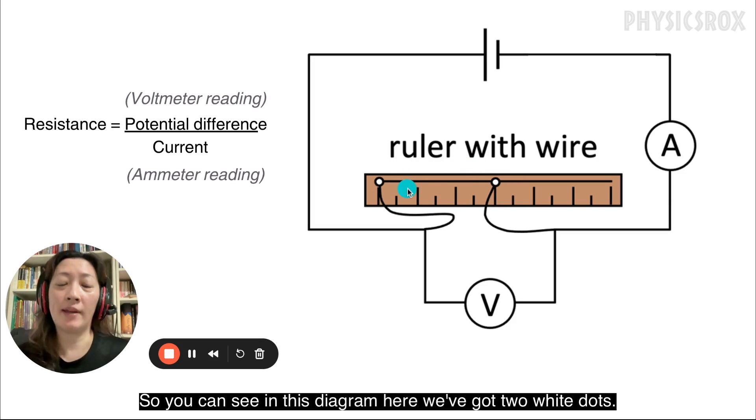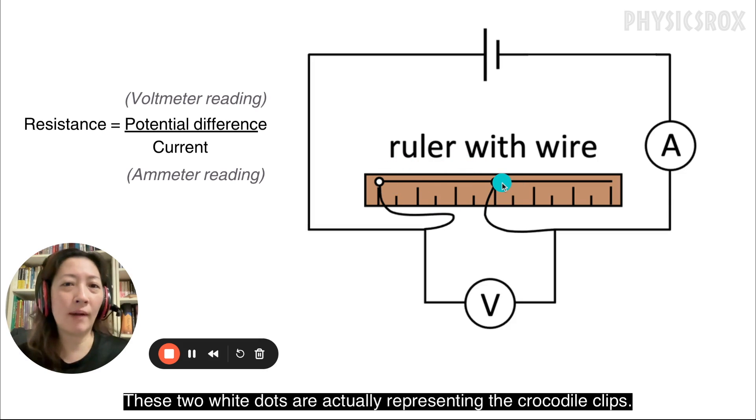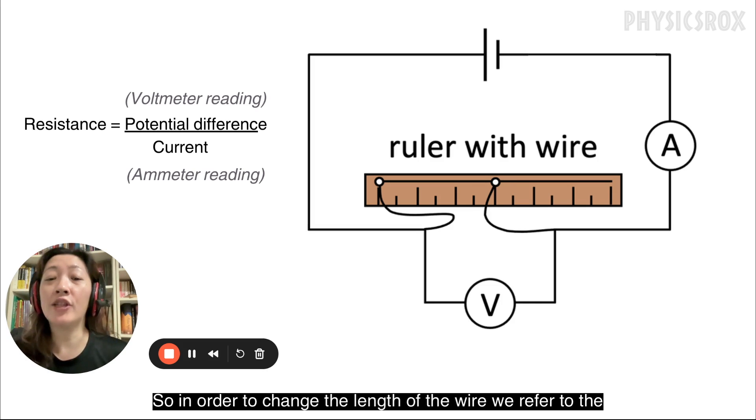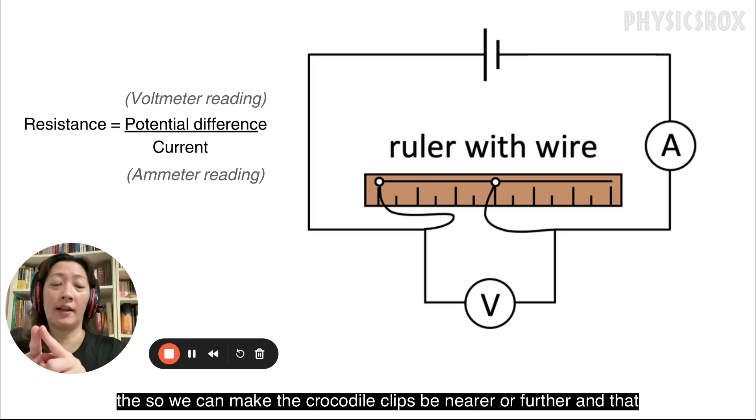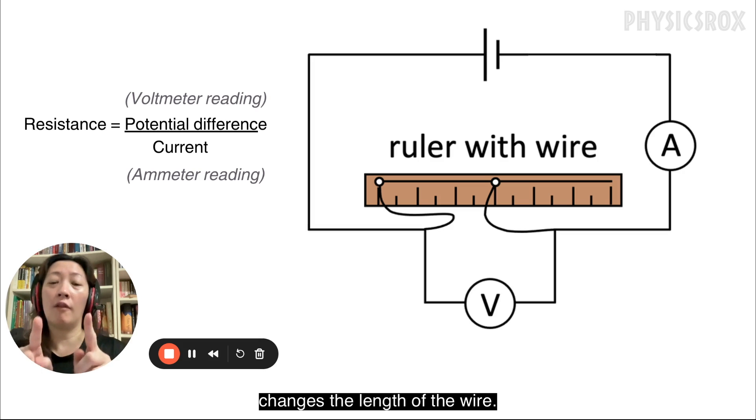So you can see in this diagram here we've got two white dots. These two white dots are actually representing the crocodile clips. So in order to change the length of the wire, we refer to the scale on the ruler and we adjust the crocodile clips based on that length. We can make the crocodile clips be nearer or further and that changes the length of the wire.